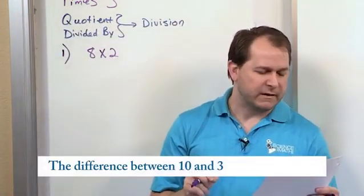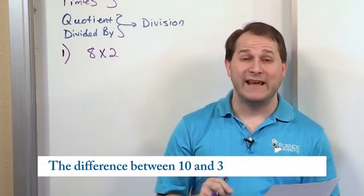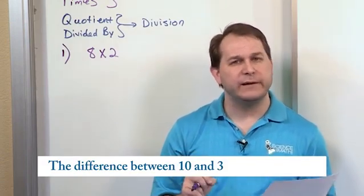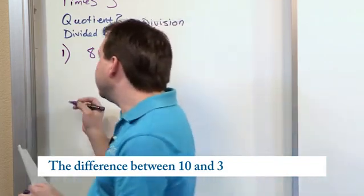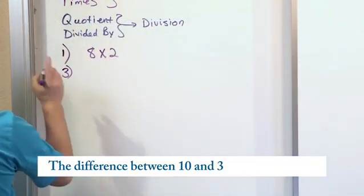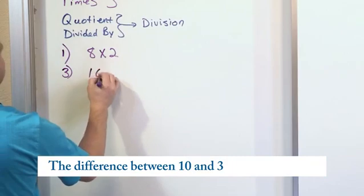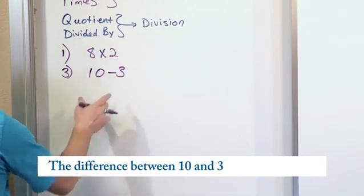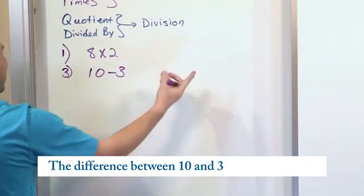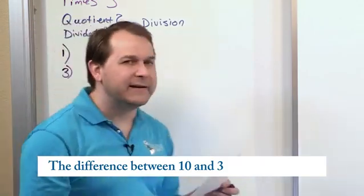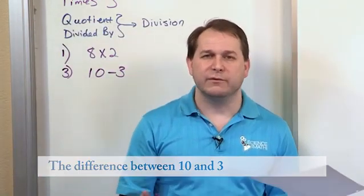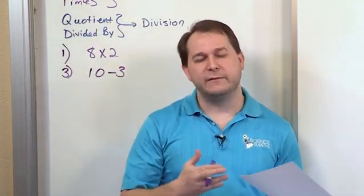The next one would be the difference between ten and three. So if we're going to write that, the word difference should trigger in your mind subtraction. So the difference between ten and three is going to be written 10 - 3. You would not want to write it as 3 - 10, because that's not really possible. You can't really do 3 - 10. You don't have enough to subtract, so it needs to be 10 - 3.